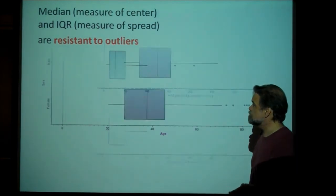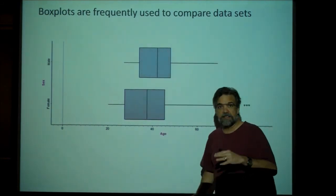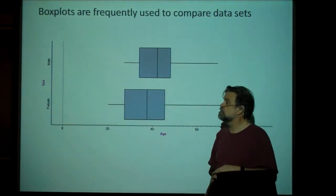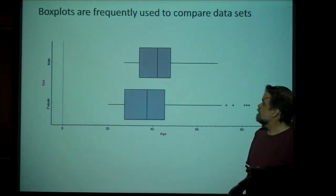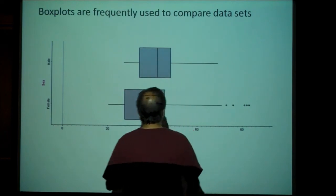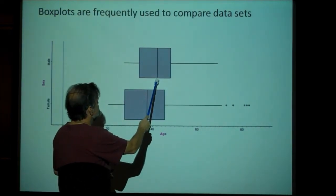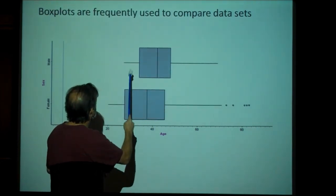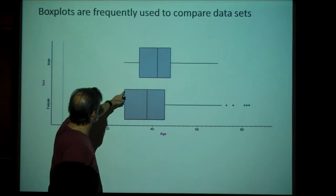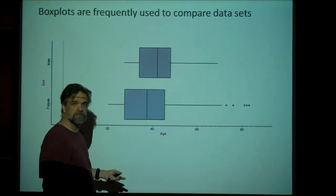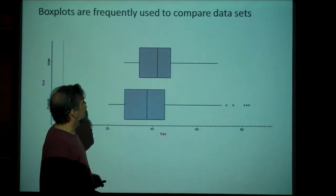So, box plots are also used to compare data sets. Here, we're looking back at the age again of these 98 Houstonians. And this time, I've split them up between males and females. And so, now I can look at these data and I can see, well, my typical male, the median, is actually older than my typical female. As a matter of fact, the youngest male that I have is about as old or older than 25% of the women. This is kind of weird. I've got a bunch of young women and not too many young men.